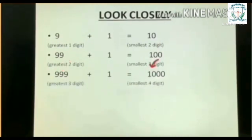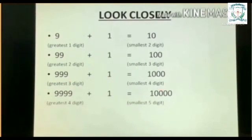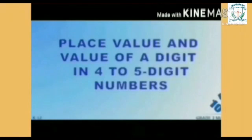999 plus 1 equals 1000. Greatest three-digit number is 999 and the smallest four-digit number is 1000. 9999 plus 1 equals 10,000, where the greatest four-digit number is 9999 and the smallest five-digit number is 10,000.